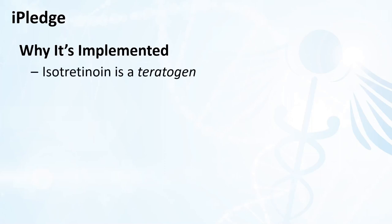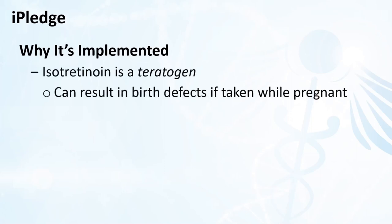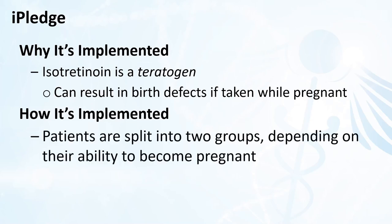Let's talk about the reason why iPledge was implemented. Isotretinoin is a teratogen — if it's taken during pregnancy, it can result in birth defects. The fact that isotretinoin can cause birth defects directly affects how iPledge is implemented. Specifically, the rules and requirements of iPledge vary depending on the patient's ability to become pregnant. Notice that we're saying their ability to become pregnant, not their likelihood or probability. iPledge is focused on the theoretical ability of a patient being able to get pregnant.